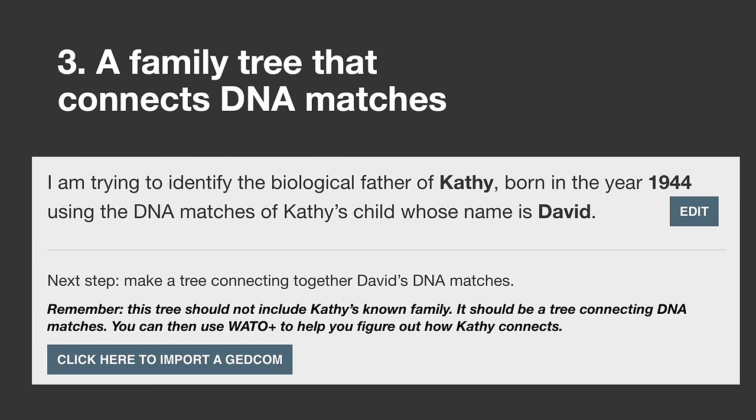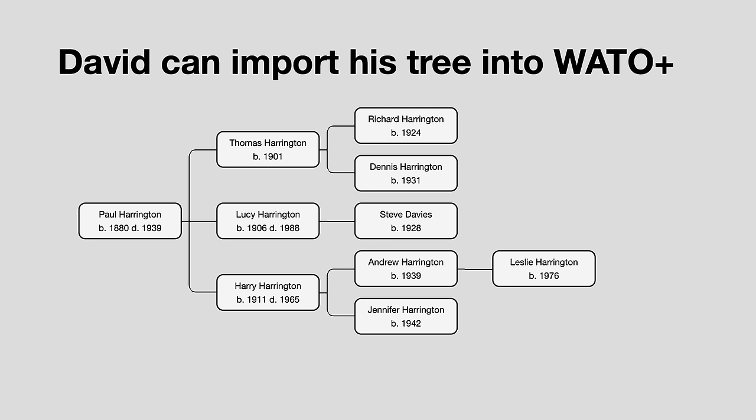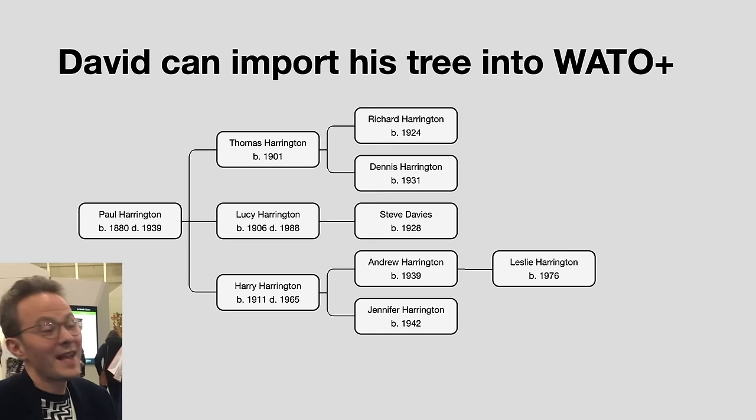The last thing David needs is a tree connecting the relevant DNA matches — that part requires your own genealogical skills; the code can't do it for you. But it's a puzzle, and we're genealogists — we like puzzles. It's going to break through a brick wall if you can do it. So he has this tree ready to go.